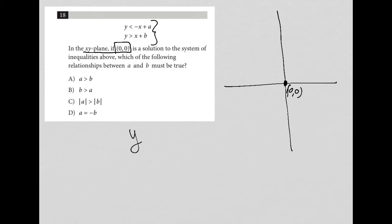What else do I know? I know that with the first inequality, y is less than negative x plus a, which means I'm going to have a negative slope going through a as my y-intercept.